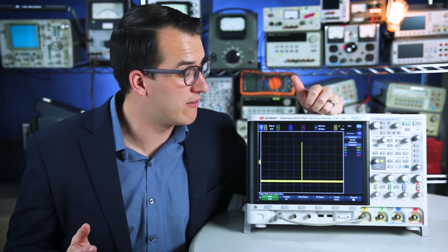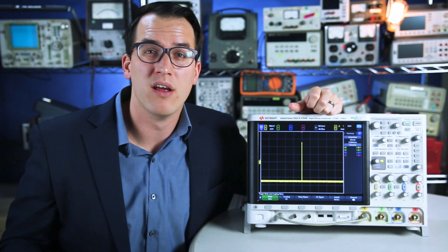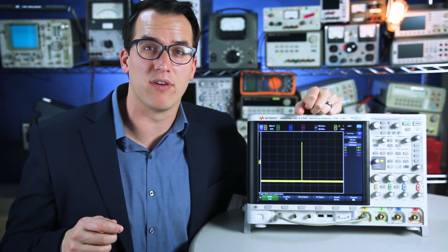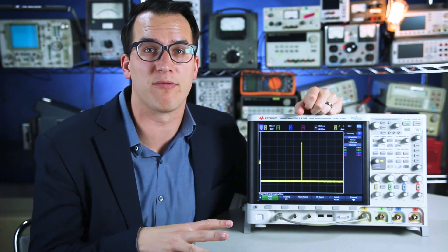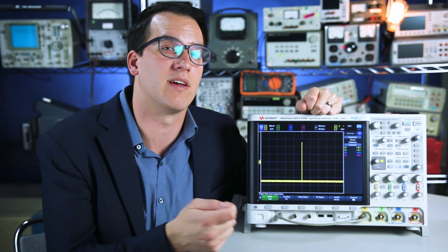Now why would I even have auto mode if auto and normal triggering mode look the same under these settings, and when I was zoomed in normal triggering worked better? Auto mode is nice because you can still see some signal displayed on the screen and go in and set up your scope appropriately for the signals that you just hooked up to.